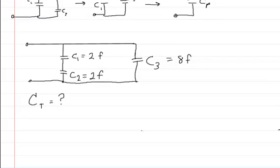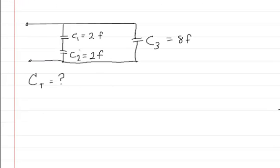So now let's work out a problem. So here I drew the circuit. Basically, we have C1 and C2, which are in series, and C3 is in parallel with C1 and C2. And we want to find out what the total capacitance of the circuit is. So first, I'm going to start off with C1 and C2 because they're in series.